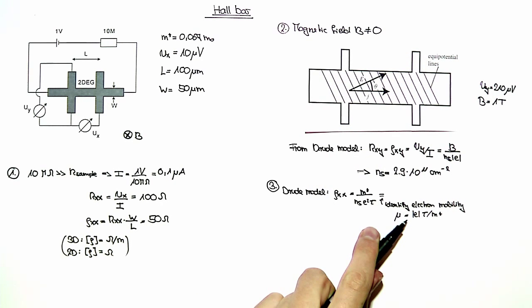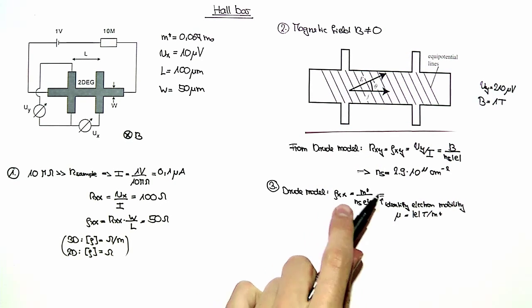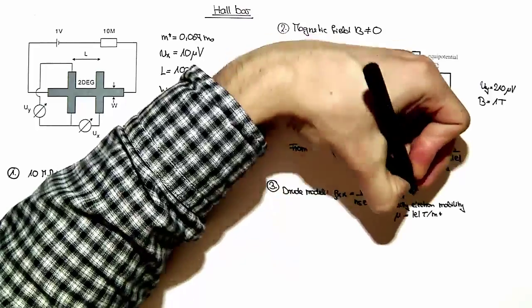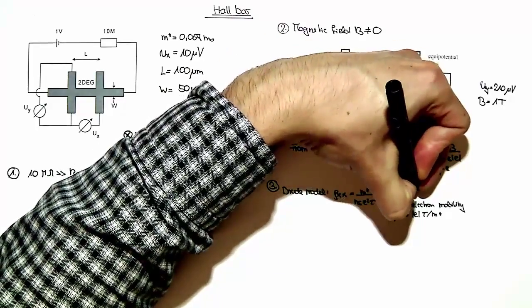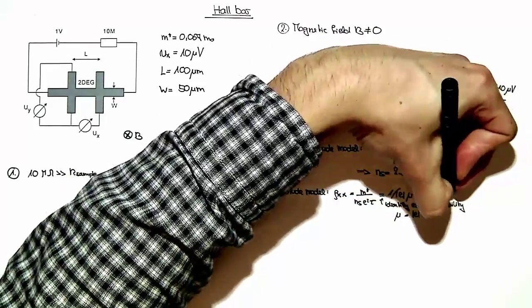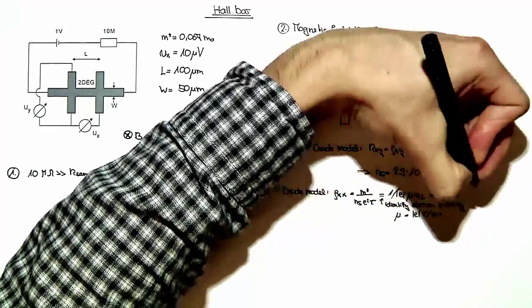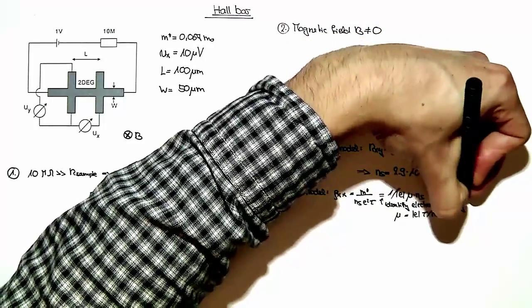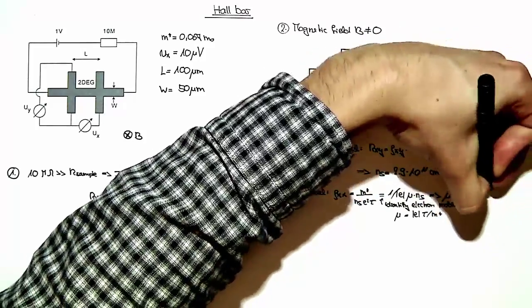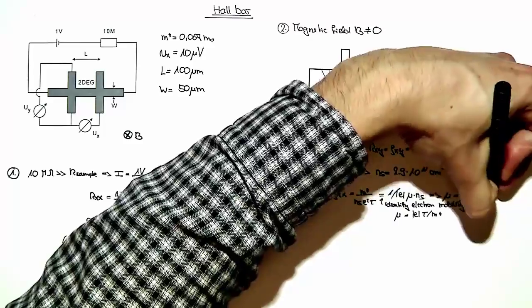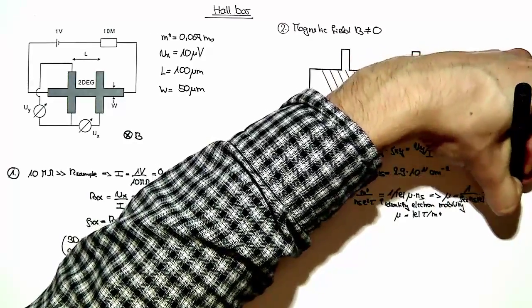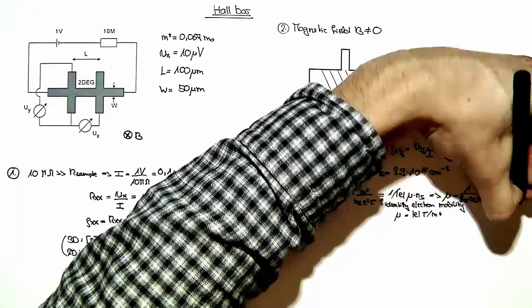That's the definition of the mobility. We can plug that in here such that we obtain 1 over E times mu times Ns. We can directly solve this to obtain mu equals 1 over rho_xx times Ns times E, which is about 430,000 centimeters squared per volt seconds.